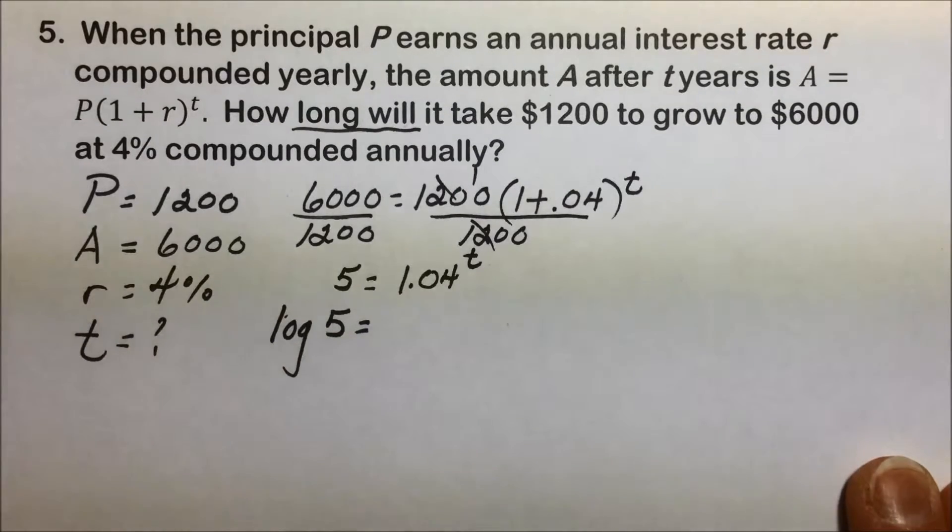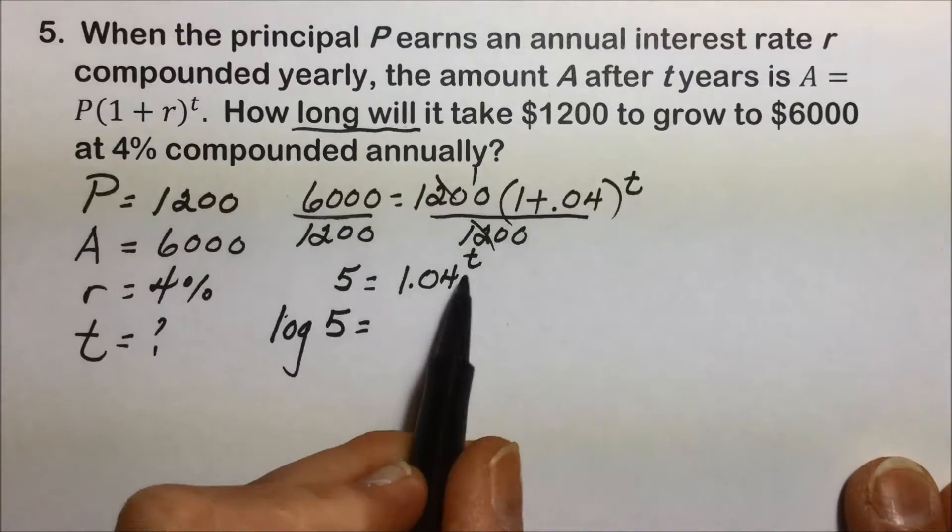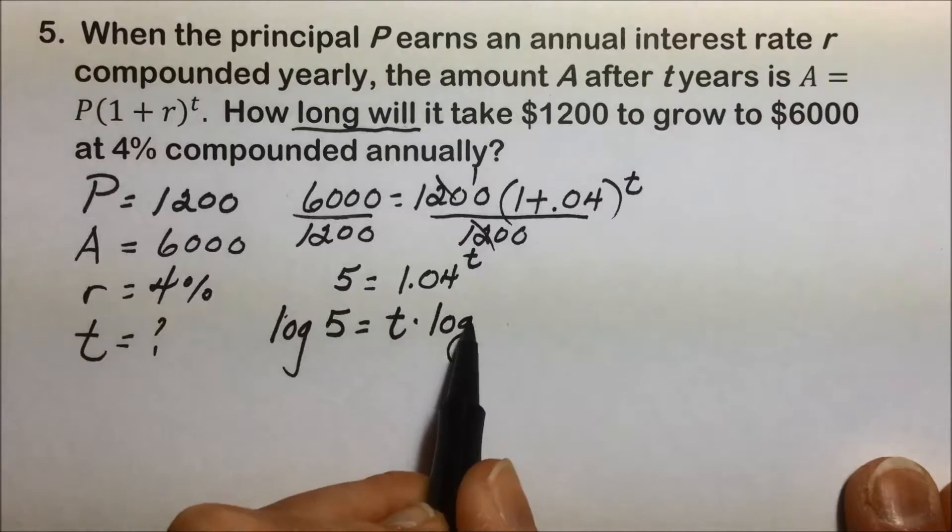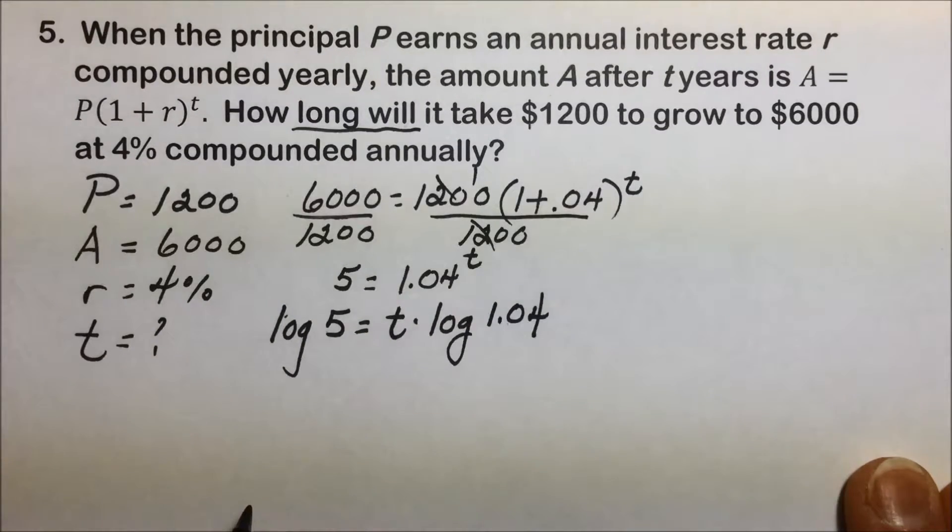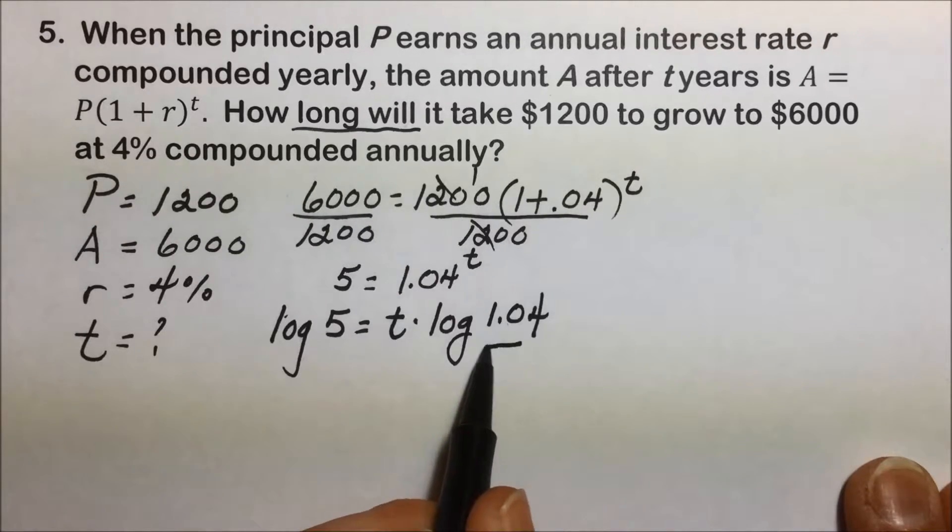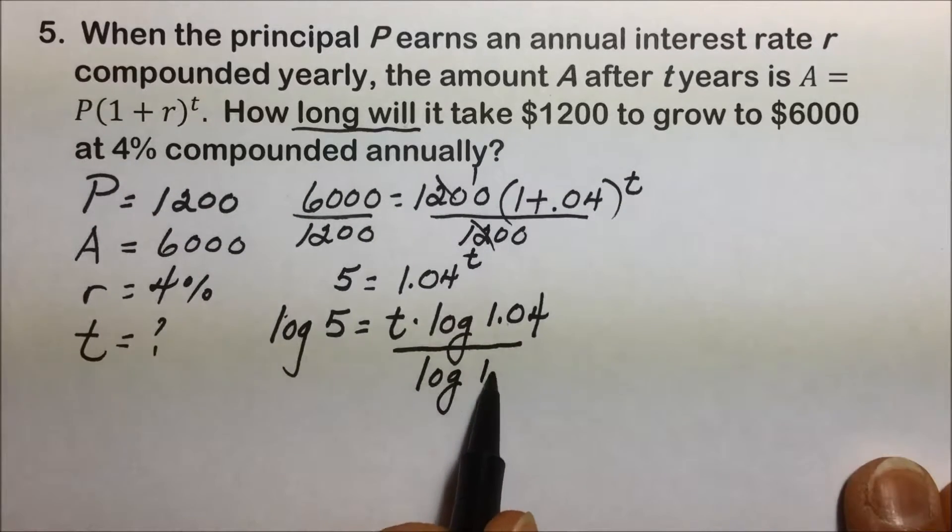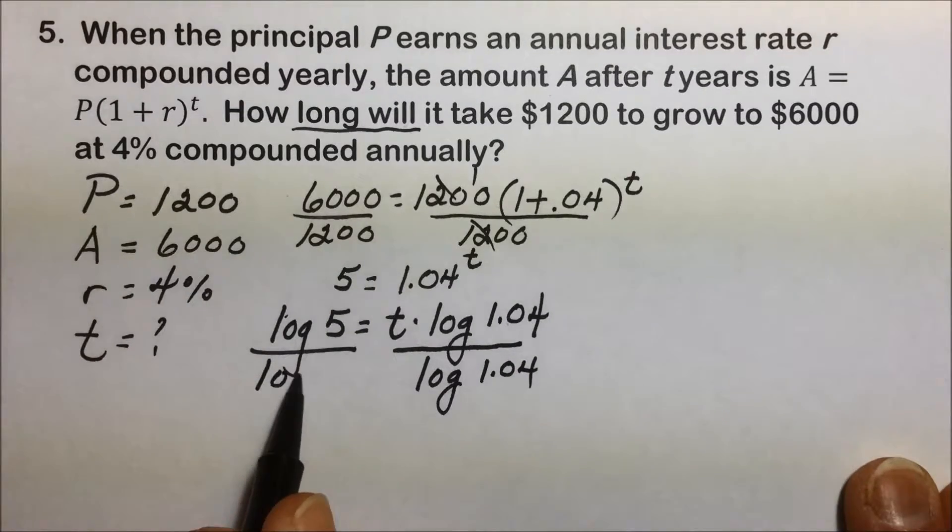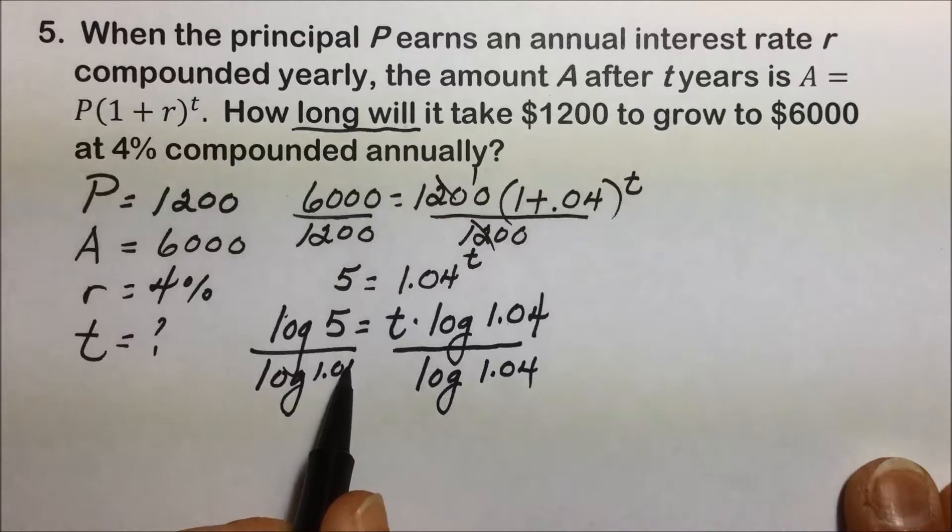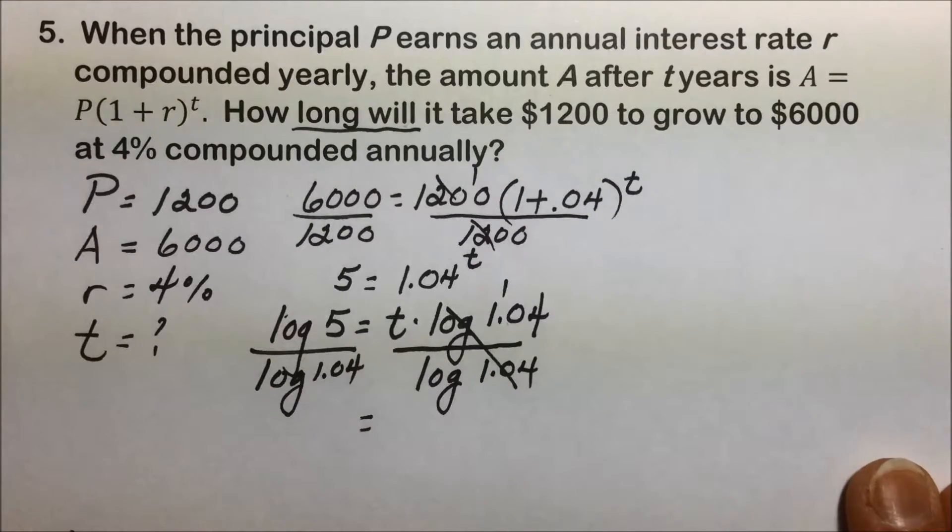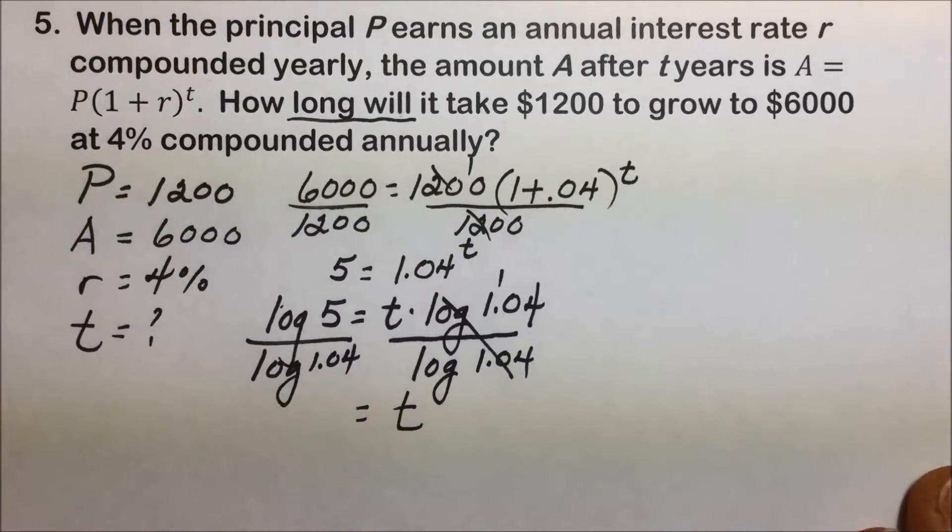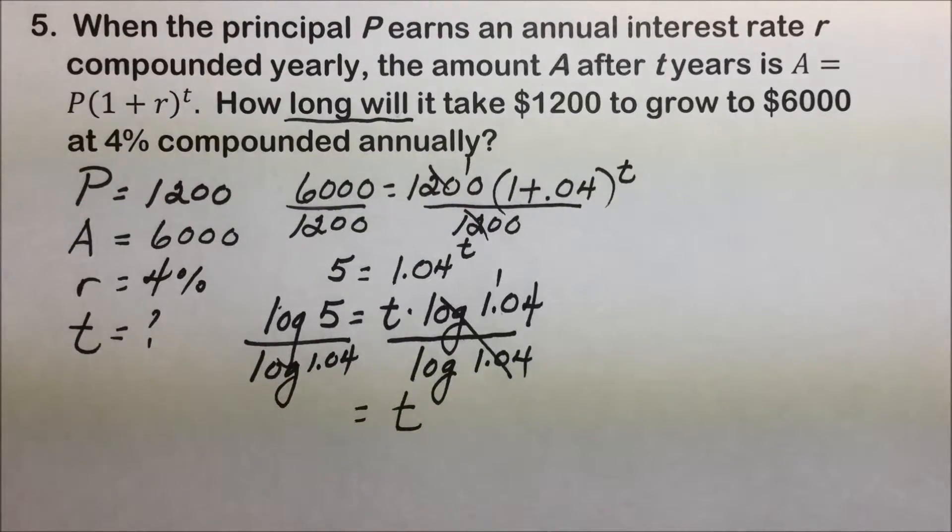I'm going to do a common logarithm. And again, when we take the log of a quantity with an exponent, the exponent becomes the coefficient. Next, to get t by itself, all we need to do is divide to undo the multiplication. These common values in a quotient situation are equal to 1, so we have t is equal to the following expression that we now can grab a calculator to find the value.